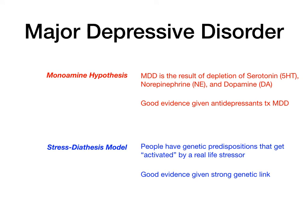The other model is known as the stress diathesis model, which says that patients have genetic predispositions that are activated by real-life stressors — basically two hits. The first is a genetic vulnerability you're born with that makes you more likely to get MDD. Then there's an environmental hit: for example, starting college, being completely stressed out, not sleeping, diet changes, and losing your normal support network. That environmental stressor pushes genetically predisposed patients over the top.